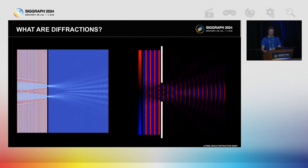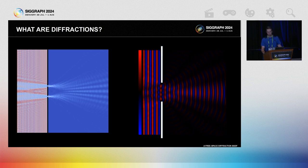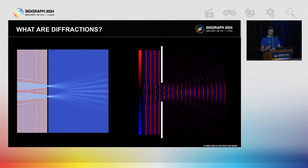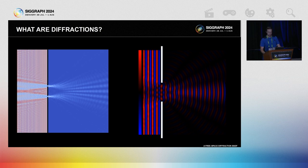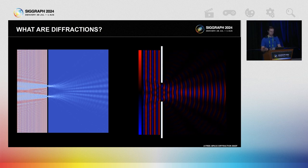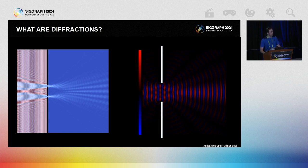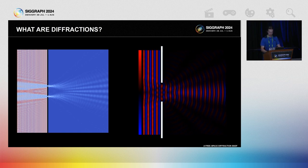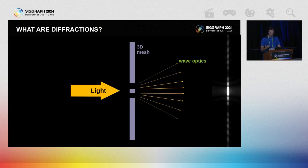As we depart the ray optical context, the picture changes. Light consists of electromagnetic waves, and as these waves are partially occluded by objects, they diffract — meaning that the structure of the underlying electromagnetic field breaks up, after which the field reorganizes into new waves that carry light into new directions that may potentially lie in the shadowed regions.